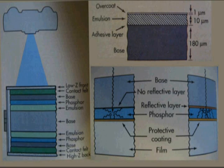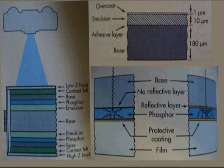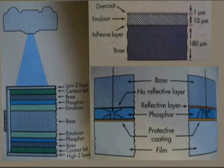The x-ray energy is absorbed by the intensifying screen material and a portion of it is converted into light. The light, in turn, exposes the film. Intensifying screens are used because film is much more sensitive to light than to x-radiation. Approximately 100 times as much x-radiation would be required to expose a film without using intensifying screens.